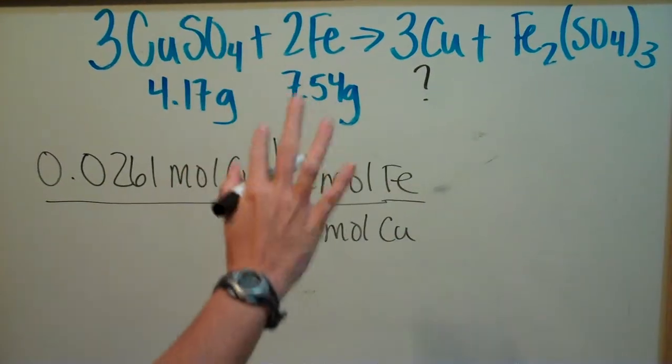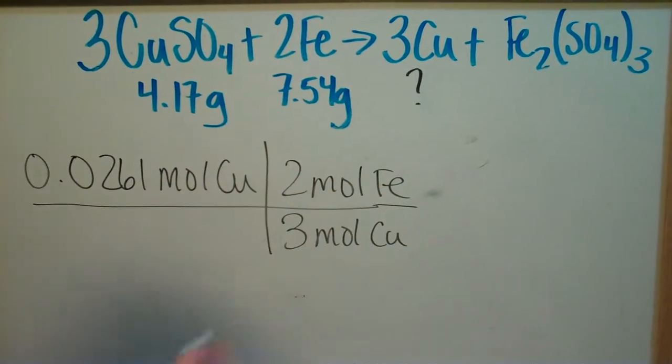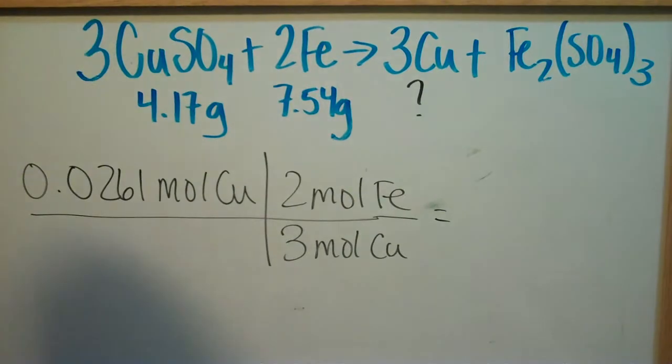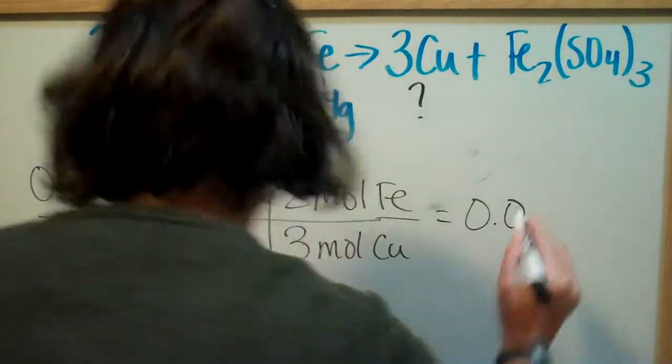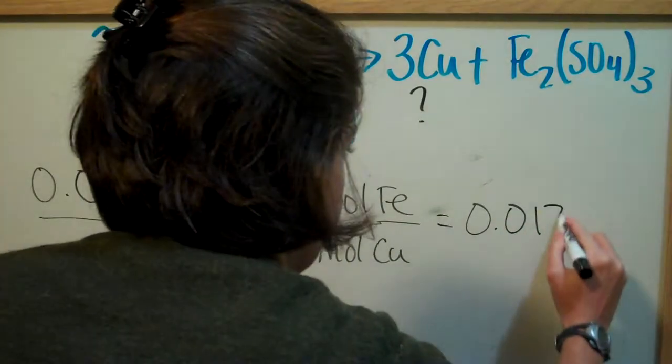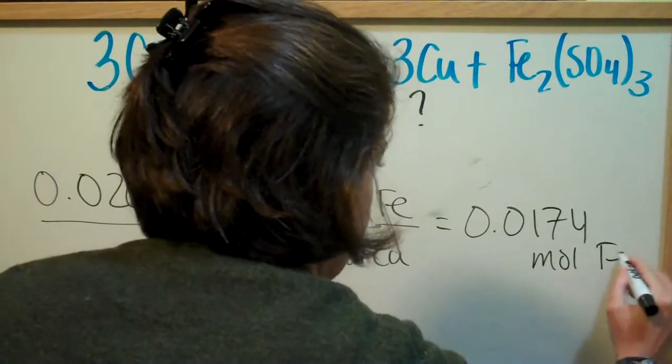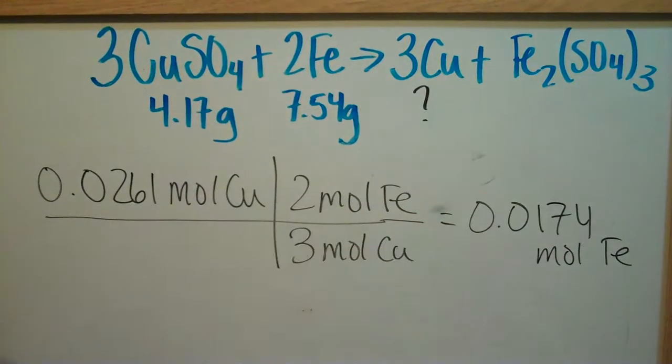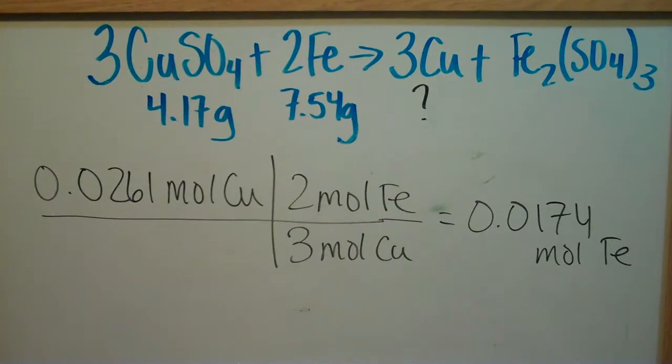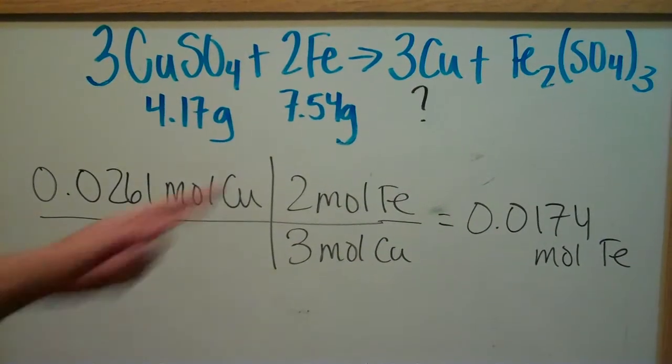Iron is in excess. We determined this the last video. And so when you do the math here, you realize that this is the number of moles of iron that you're going to get to react with this copper.